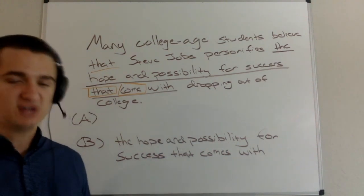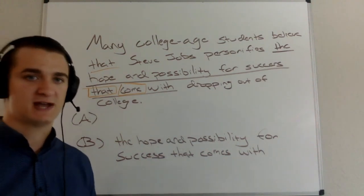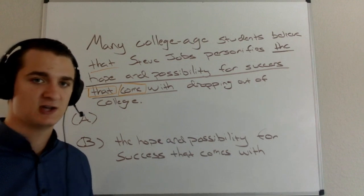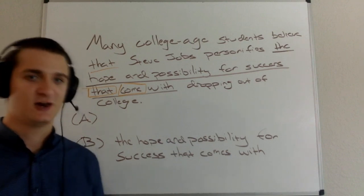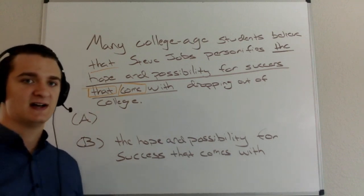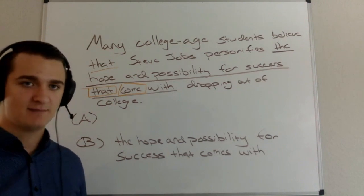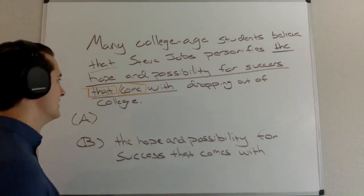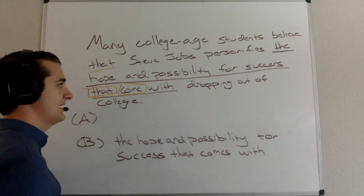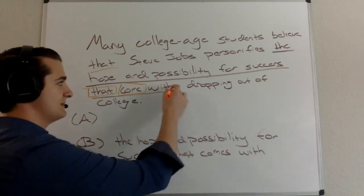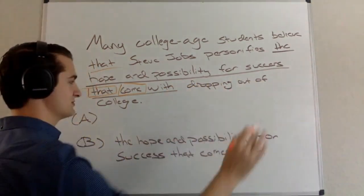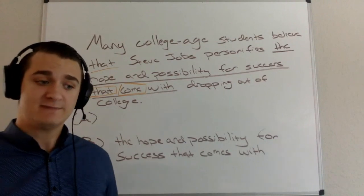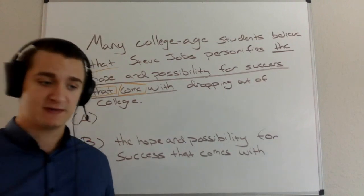So 'that' must then refer to something plural before it. I'm going to look before the word 'that' and see what it could logically modify that is plural. That would be 'the hope and possibility for success.' Steve Jobs personifies the hope and possibility for success — what hope and possibility? The hope and possibility for success that come with dropping out of college. So A seems pretty good to me here.